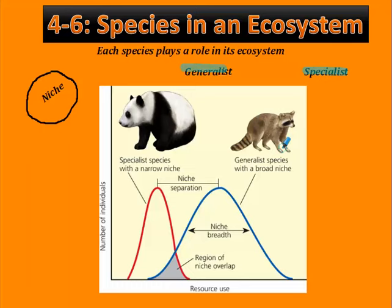Specialist species basically have narrow niches. They can only live in one type of habitat, eat one type of food, or tolerate a really narrow range of environmental conditions and climates. In this diagram we see that the panda is one. Because of these narrow niches, specialists are more prone to extinction when environmental conditions change. The panda, for example, is highly endangered because of habitat loss, its low birth rate, and its absolutely specialized diet of bamboo.